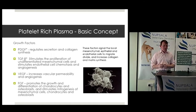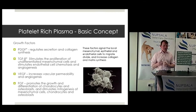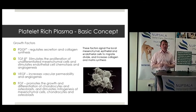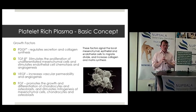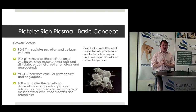TGF-beta — transforming growth factor beta — has two isoforms: TGF-beta 1 is pro-scarring and TGF-beta 2 is anti-scarring. It's a fantastic growth factor to work with and monitor when you apply PRP. For me, the big thing about TGF-beta is its upregulation of chemokines and chemotaxis — it has the ability to wake everything up.